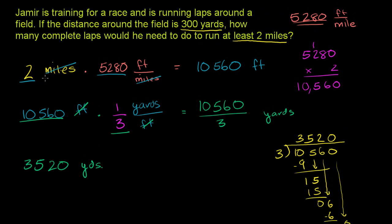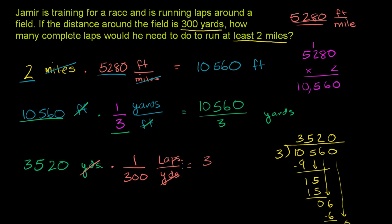That's the total distance he has to travel — the equivalent of 2 miles. Now we want to figure out how many laps there are. We want yards to cancel out and laps in the numerator. The distance around the field is 300 yards, so we have 300 yards for every one lap. The yards cancel out and we get 3,520 times 1 over 300, which is 3,520 divided by 300 laps.